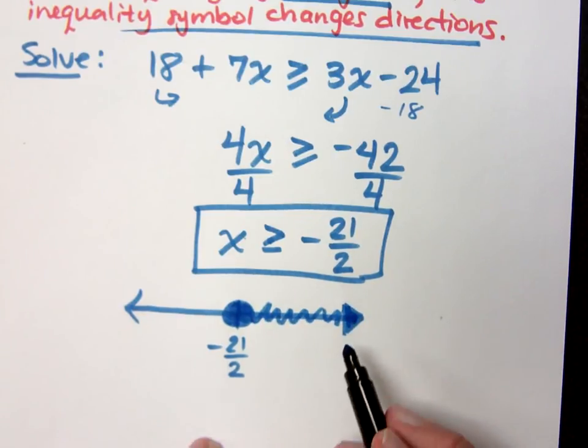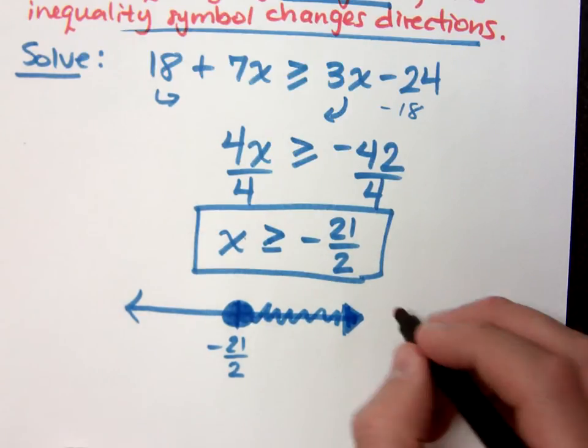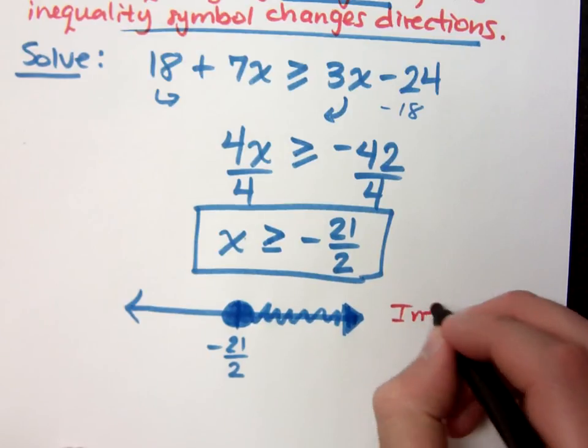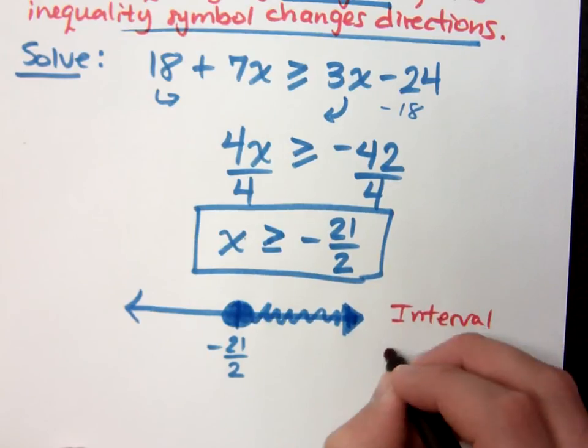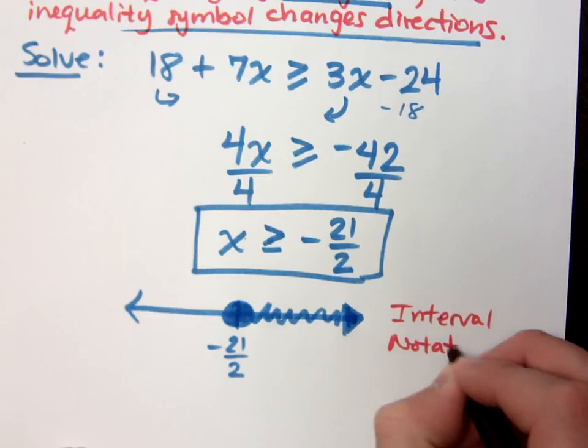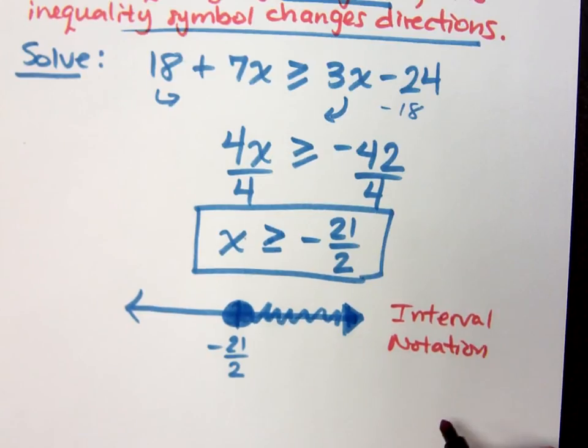So this is what the graph looks like, but I want to make sure I write my answer in interval notation. Interval notation, if you remember, goes from left to right.